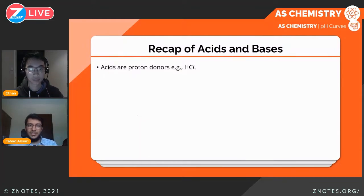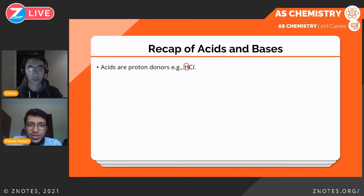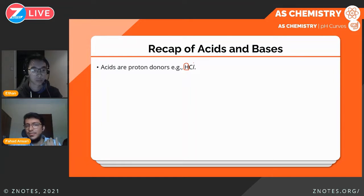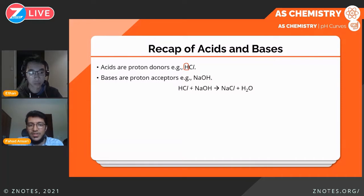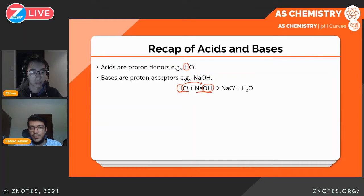Acids are proton donors. A simple example is hydrochloric acid, HCl. It contains an H which will be donated as a hydrogen ion. Because hydrogen ions only consist of a proton in the nucleus, that's why we call it a proton donor. Bases are proton acceptors — the opposite of acids. NaOH is a proton acceptor. The HCl donates a hydrogen ion and the hydroxide ion in sodium hydroxide accepts H+, giving H₂O as the product of the proton transfer between acid and base.